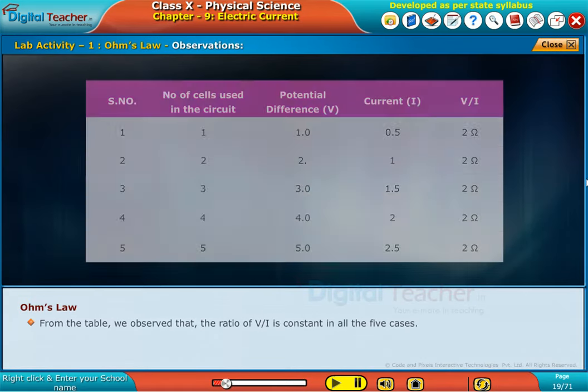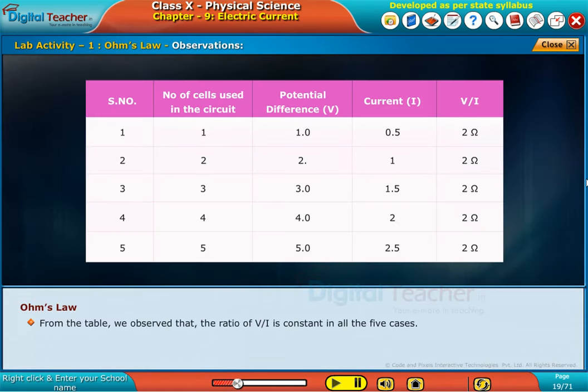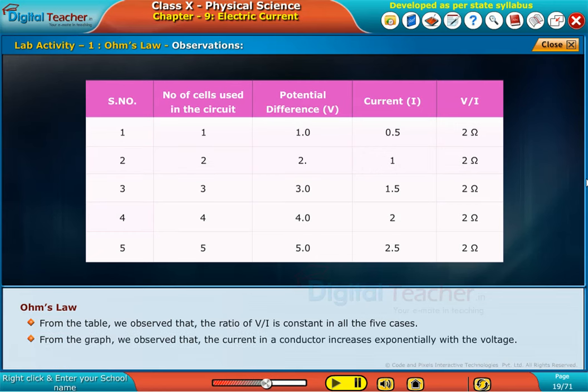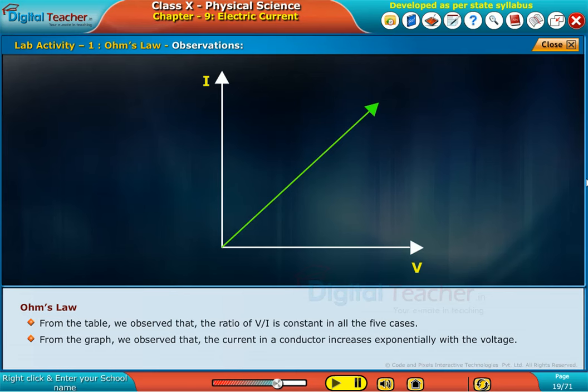From the table, we observed that the ratio of V by I is constant in all the five cases. From the graph, we observed that the current in a conductor increases exponentially with the voltage.